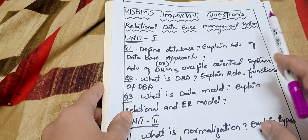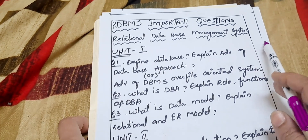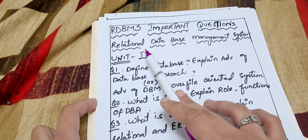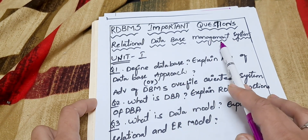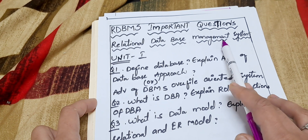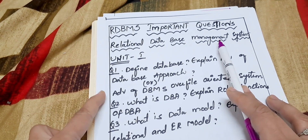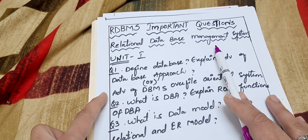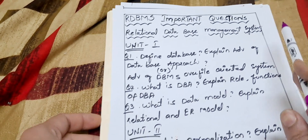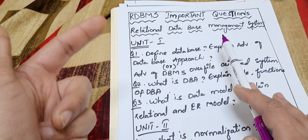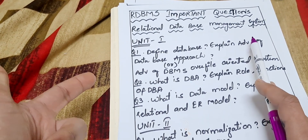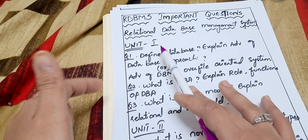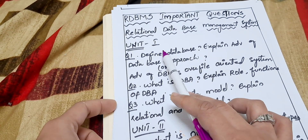Let's start our topic. RDBMS stands for Relational Database Management System. This subject is in BCom second year, third semester according to Osmania University syllabus. All colleges affiliated to Osmania University — their students can follow this. We have five units in this subject.